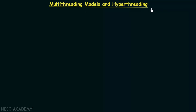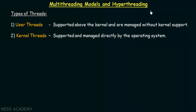Before we go into multithreading models, let us understand the types of threads that we have. Basically there are two types of threads. The first one is user threads and the second one is kernel threads. User threads are the threads that are supported above the kernel and are managed without kernel support — these are threads operating at the user level, created by the users or developers.